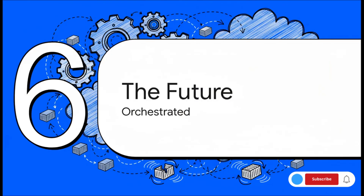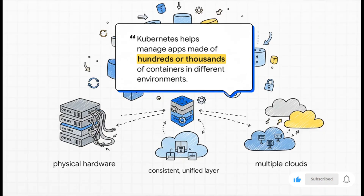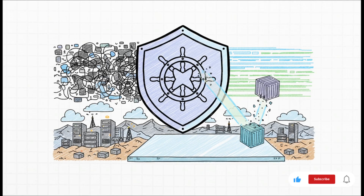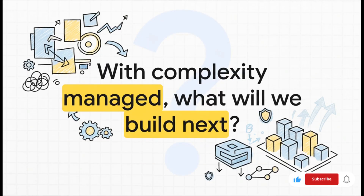When you put it all together, it becomes clear that the future of application deployment is orchestrated. This technology doesn't just improve things a little — it fundamentally changes the entire game. The insane complexity of managing thousands of containers across all sorts of infrastructure — physical hardware, virtual machines, different clouds — suddenly becomes manageable. Kubernetes provides that consistent, unified layer on top of everything, taming the chaos of microservices and creating a robust, self-healing system. It has rightfully become the de facto standard for running modern applications in the cloud. The only question left is: what are we going to build next?